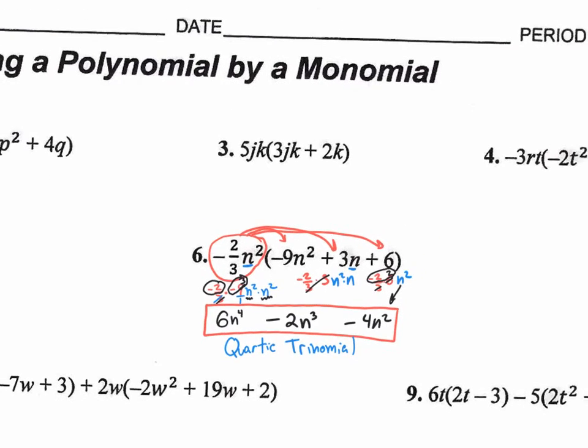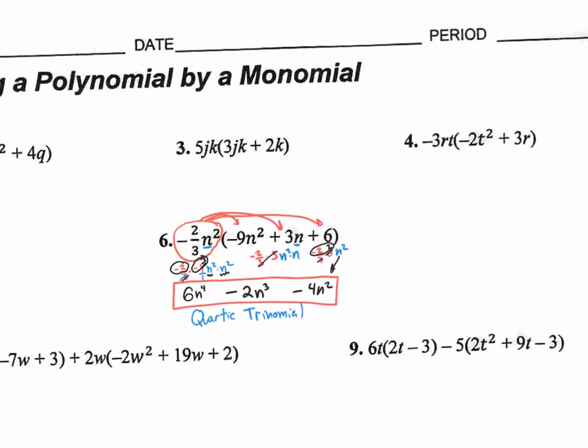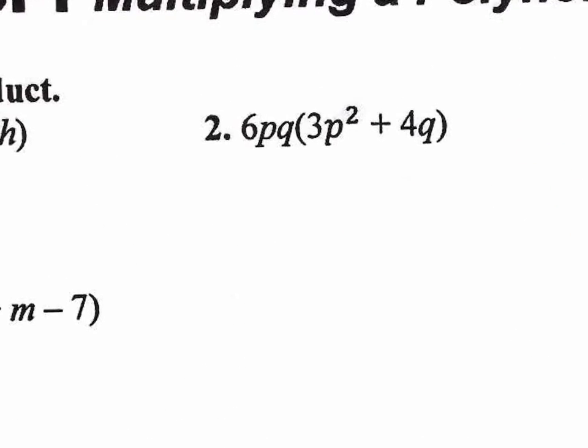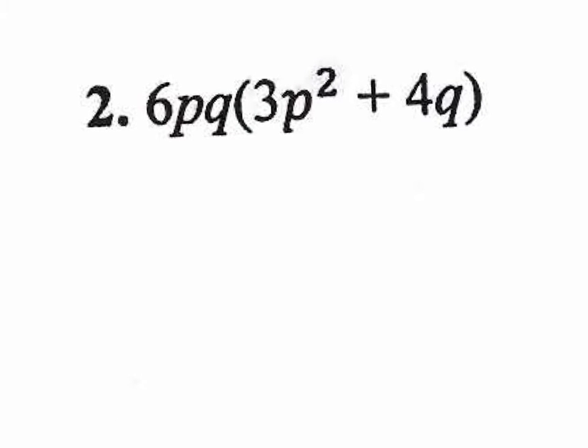Now obviously these other ones are super easy compared to that one. They don't have fractions. Do you guys want to see one without fractions? Sure. Okay, so number two right here, we're going to take this guy and multiply it by that guy. So again, the numbers, the coefficient 6 times 3, that's 18. The p times p squared, that's p to the third.